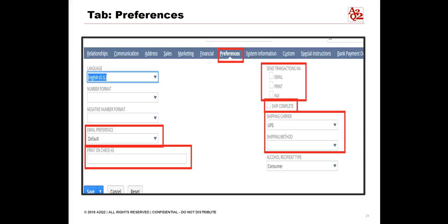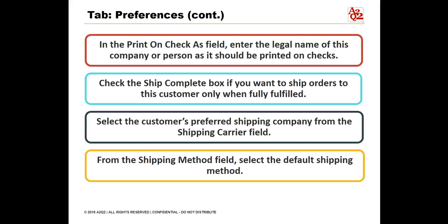The Preferences tab reflects different default functionalities as well, such as email, print, and fax for different transactions, especially sales invoices. In the Email Preference field, you can choose a different method of emailing forms to this customer. You can see the default email setting at Home > Set Preferences. In the Print on Check As field, enter the legal name of this company or person as it should be printed on checks. Next to Send Transactions via, check the appropriate boxes: Email — check this box to email transactions; Check — check this box to set the To Be Printed box by default on transactions when this customer is selected; Fax — check this box to set the To Be Faxed box by default on transactions when this customer is selected.